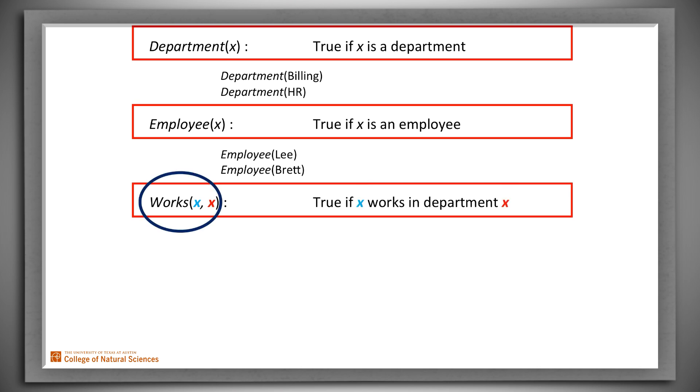Let's consider one other possibility. Suppose that instead of using two different variables, X and Y, we use the same variable, say X, twice. This definition is almost certainly not what we want. It's not going to be very useful. Remember that the scope of an individual variable is an entire definition, and within that definition, we must substitute a single value for every instance of a given variable. So with this definition, Works is only defined when its two arguments are the same. It is, for example, true if Billing works in Billing, highly unlikely. It's not even defined for Works Brett HR. And for many reasons, we don't generally want to allow predicates that aren't defined for all the values in their domains.